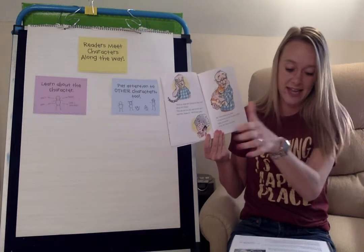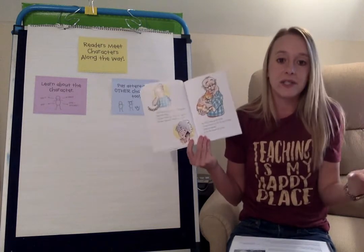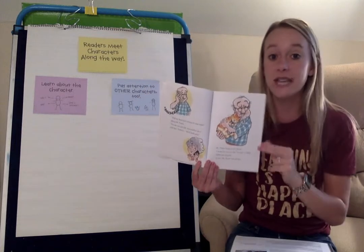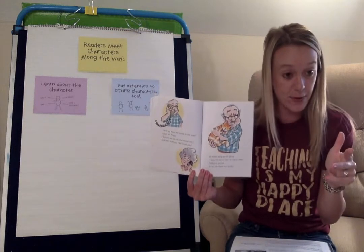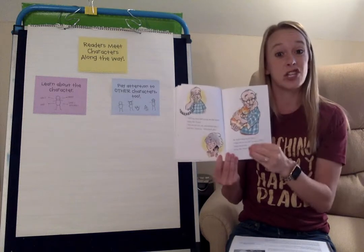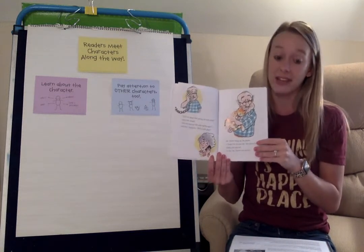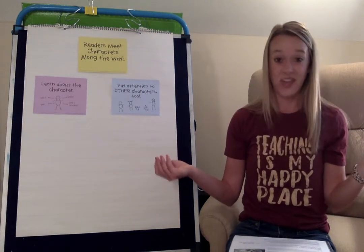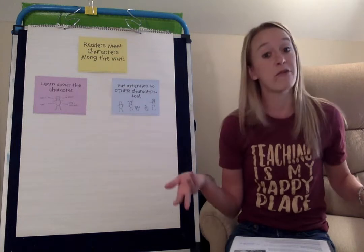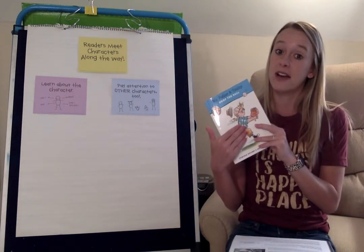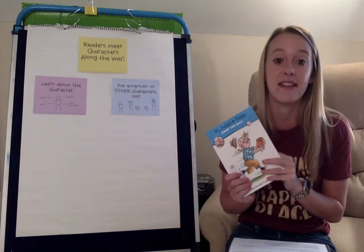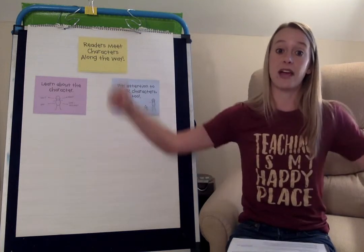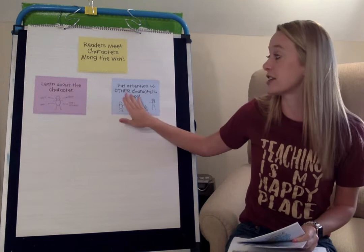As you read today, I want you to think: who else is in my story? Pay really close attention to the main character's friends, family, neighbors — anyone else in the story. And when you learn about the relationships that characters have together, you will get to know your main character even better. You can't learn about Pinky without Rex, and you can't learn about Henry without Mudge, and you can't learn about Frog without Toad — just like you can't learn about Mr. Putter without Mrs. T-berry. Today, I give you a challenge to write another post-it note in your book with a new character's name and a new fact about that character, because as strong readers we have to get to know all the characters in the story.